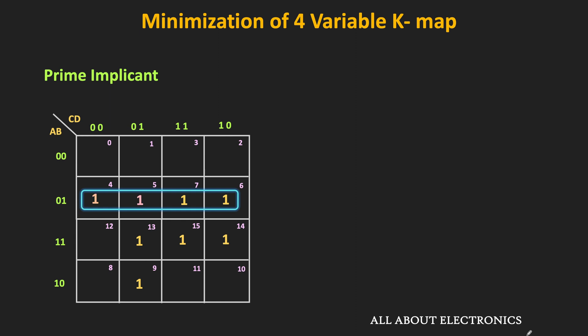Similarly, if we want to cover minterm m5, this is one group we can circle, and this is another group of 4 ones. Both groups are overlapping with each other, but none of them is being completely covered by the other group. Therefore, both groups are prime implicants. The minterm m13 can also be covered using the same group. One can think of making a group of 2 ones, but these smaller groups are already covered by the larger group of 4 ones. So these smaller groups are implicants, but they are not the prime implicants.